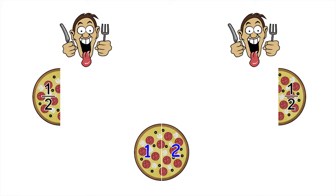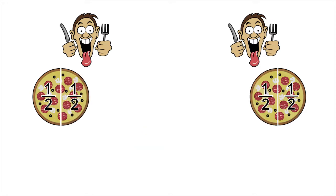We can divide the second pizza up the same way. There are two customers, so the second pizza gets divided up into two equal sized slices. Again, each customer gets exactly one half of the second pizza.